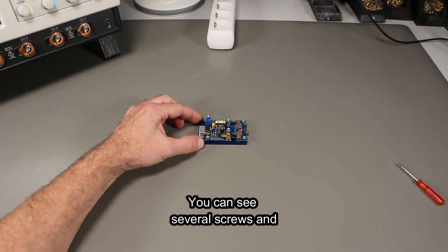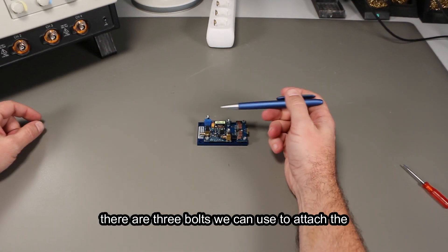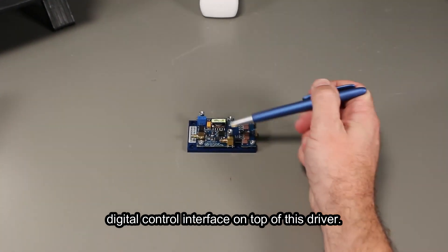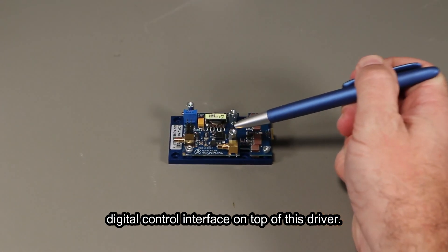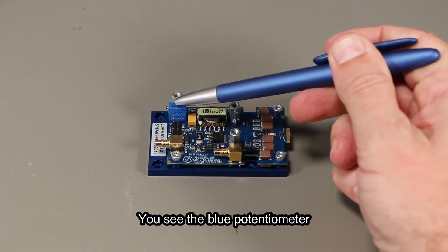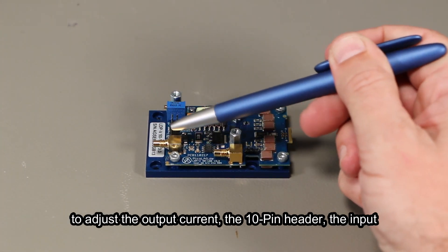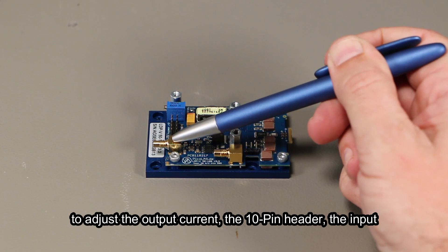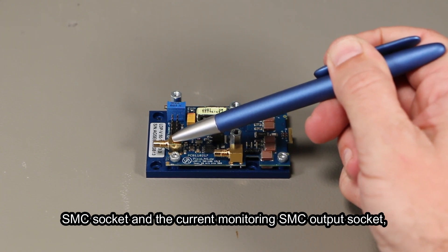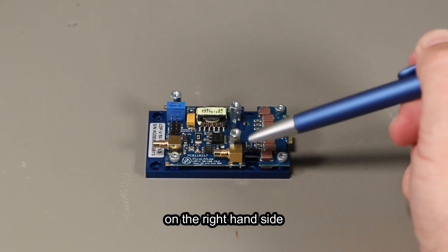You can see several screws and three bolts we can use to attach the digital control interface on top of this driver. You see the blue potentiometer to adjust the output current, the 10-pin header, the input SMC socket and the current monitoring SMC output socket on the right hand side.